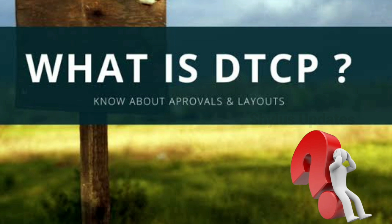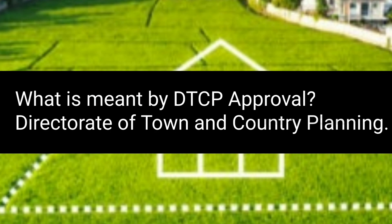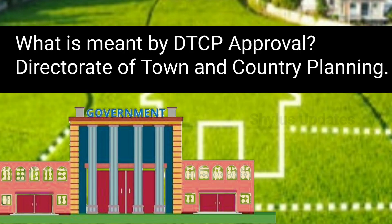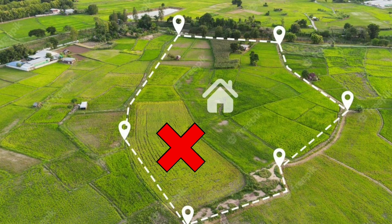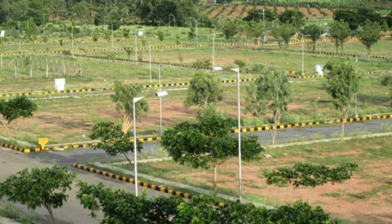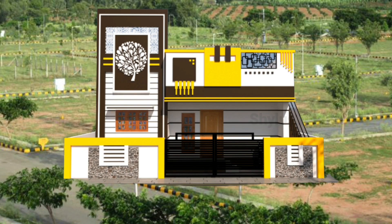First, let us see what is meant by DTCP. DTCP means Directorate of Town and Country Planning. It is a government department that helps in planning and regulating rural and urban growth in different states or locations. A property without DTCP approval may be considered illegal. If you buy a plot that doesn't have DTCP approval and wish to build for residential or commercial purposes, you may have to face legal consequences.